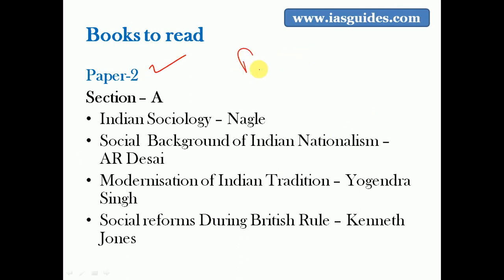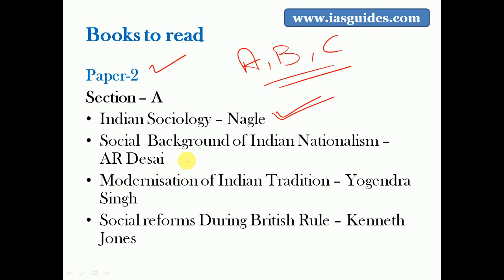For paper two, there are three sections: A, B, and C. Section A covers the introduction of sociology in the Indian context. The books are: Indian Sociology by Nagla (a very standard book), Social Background of Indian Nationalism by A.R. Desai, Modernization of Indian Tradition by Yoginder Singh (a very thin but important book), and Social Reforms During British Rule by Kenneth Jones.